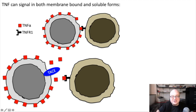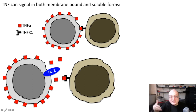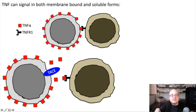When TACE clips TNF-alpha off the cell surface, it becomes a soluble cytokine that can float away and signal in paracrine or even endocrine fashion to more distant cells. So TACE is the important step in converting TNF-alpha from a membrane-bound cytokine to a soluble cytokine. Once soluble, it can go on to induce all the different things TNF induces downstream — things like programmed cell death, but also cellular proliferation and other targets. So TNF is one of those pleiotropic cytokines that can do a lot of different things.